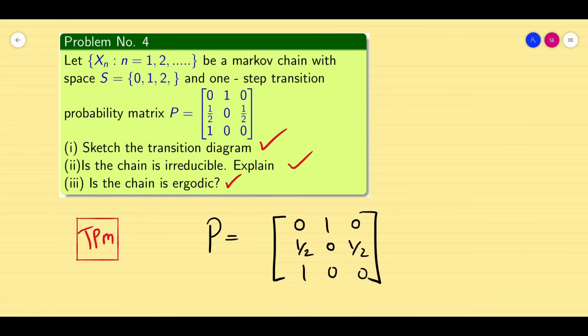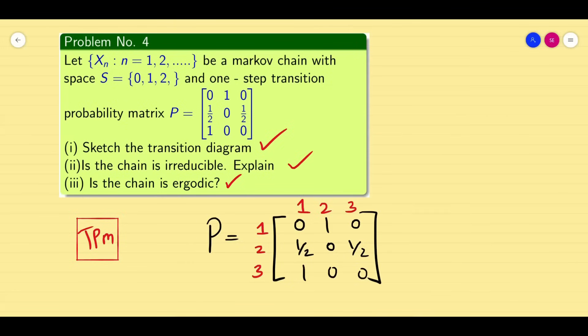Let us take the matrix capital P. We have to define the states. You can say 0, 1, 2, or you can take it as 1, 2, 3 — all are same. For a change, I am going to take the states as 1, 2, 3.